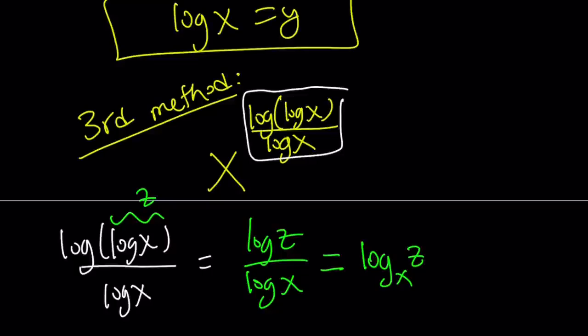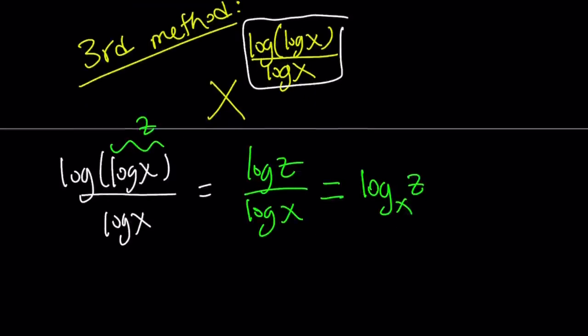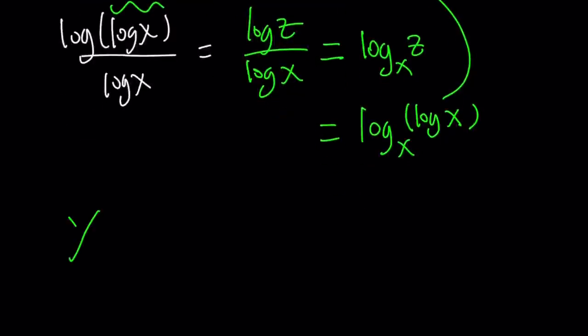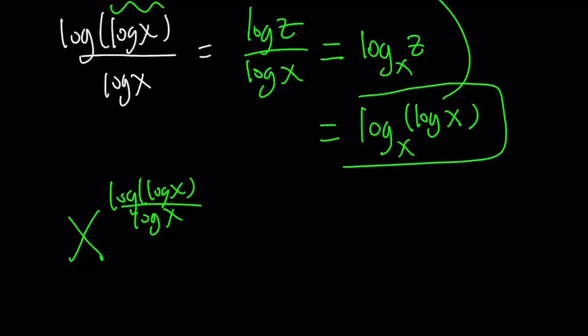But what is z? z is log x. So we can kind of replace z with log x. So this is our exponent. Remember, we're going to place it, put it back here. Remember, that was the exponent. So x to the power log log x over log x. This is log log x over log x. So we're going to replace the exponent with that x to the power log of log x with base x.